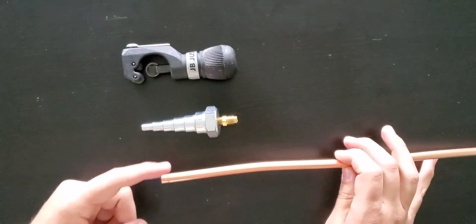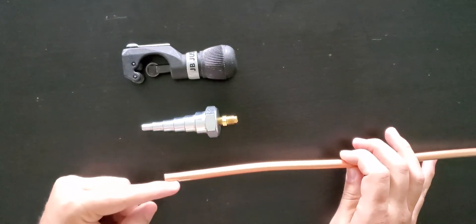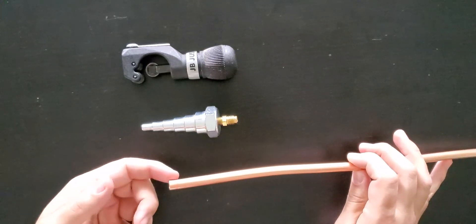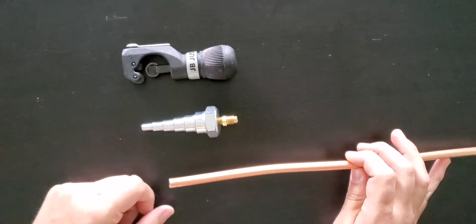When we braze out in the field, there's usually carbon buildup that takes place on the outside of the copper line. Well, that carbon buildup also takes place on the inside of the copper line.